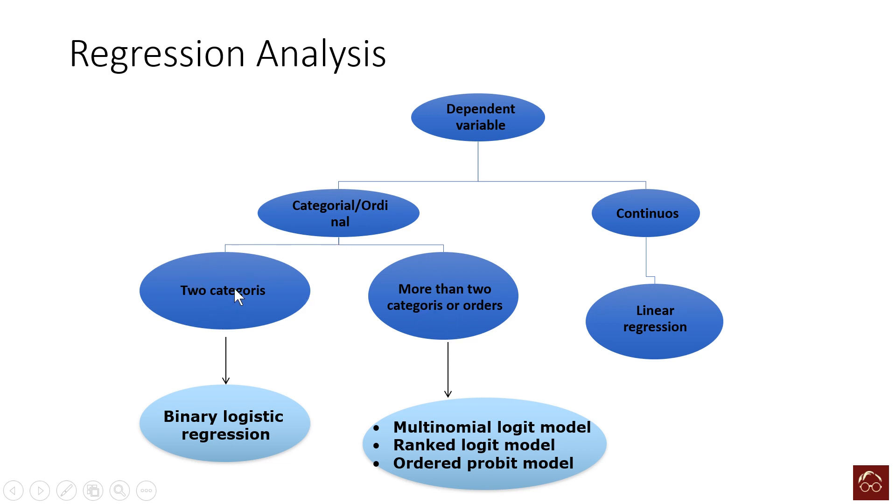If it is two categories, you go for binary logistic regression. That's simple. Sometimes some people will use binary probit regression. Both give more or less the same result. It depends more on the convention of your research field. In some fields people use more the probit, and in some fields people use more logistic, but both of them give more or less similar results.